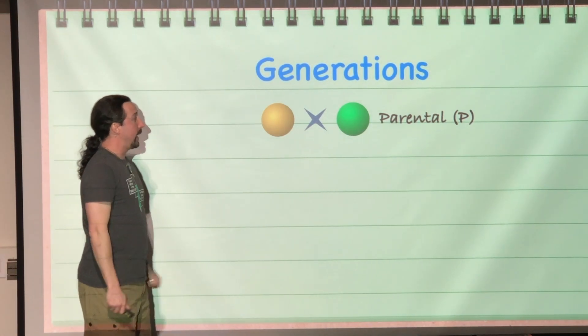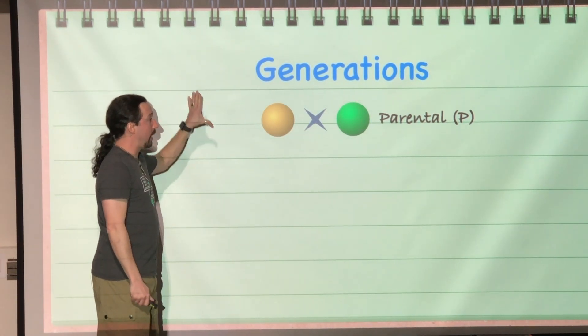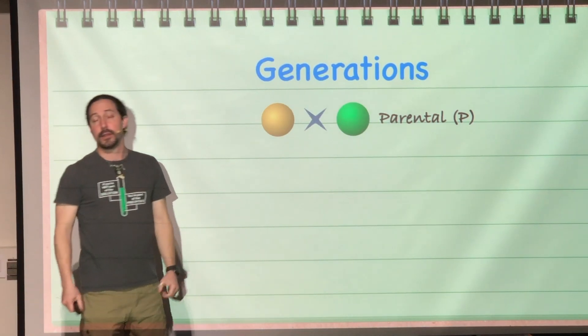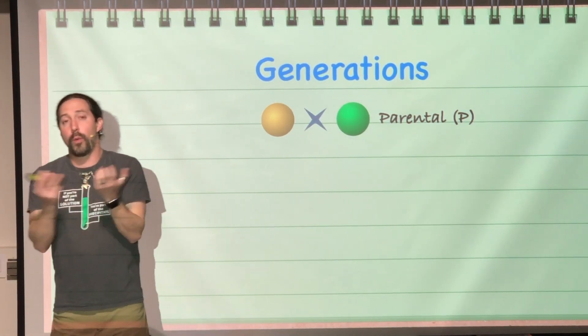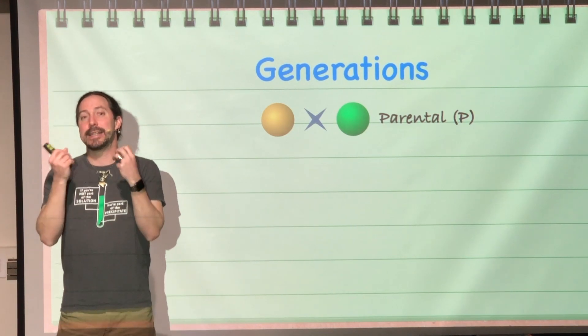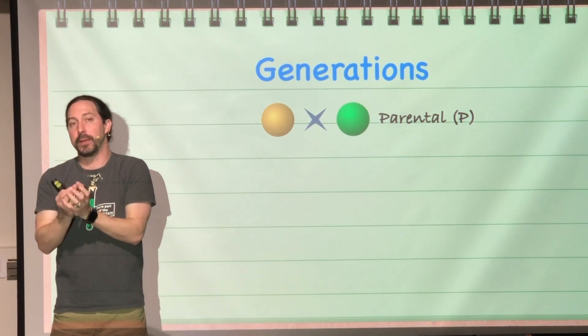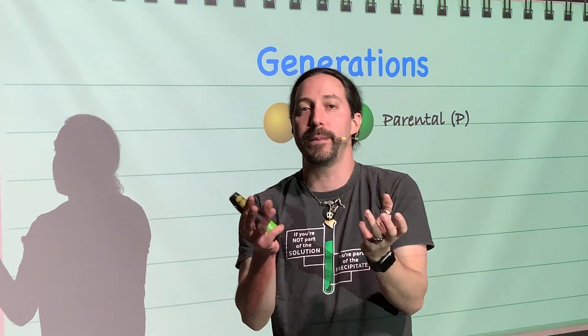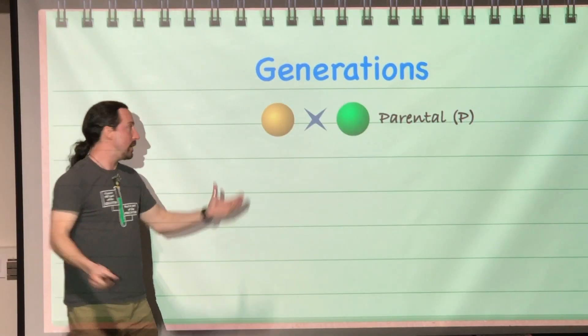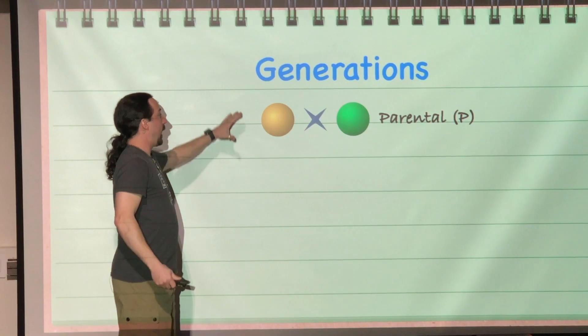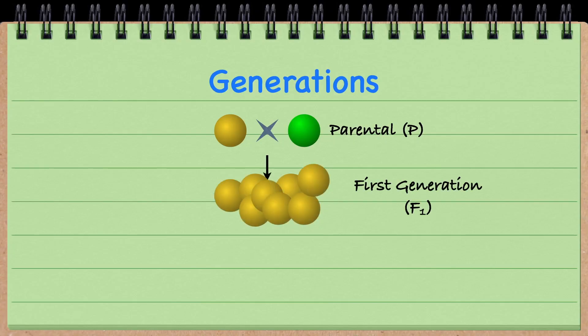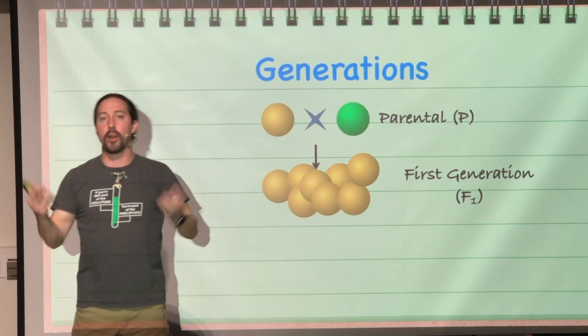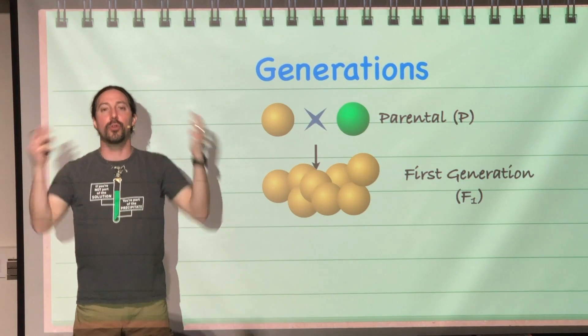In one of his experiments, he started with true breeding parental plants—some had yellow peas and some had green peas. His parentals were always reproducing as the exact same type. He had a group that always produced yellow peas and another that always produced green peas. Then he crossed them, meaning he mated them together, and looked at the offspring, which were all yellow. The entire F1 generation was full of yellow peas—there was not a single green pea present.